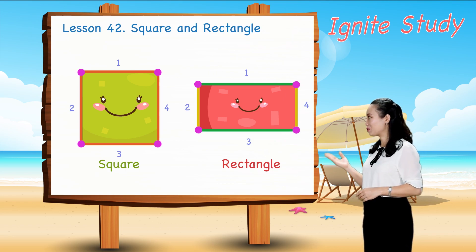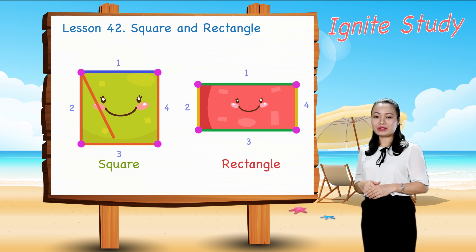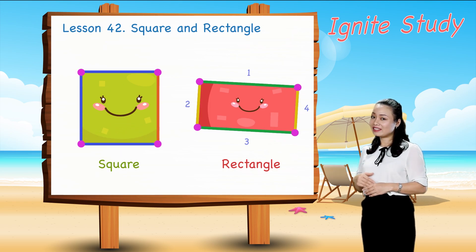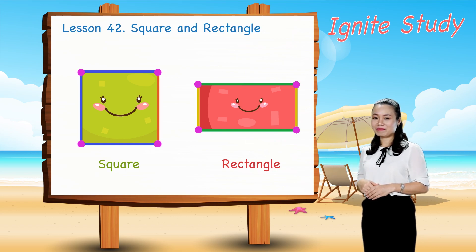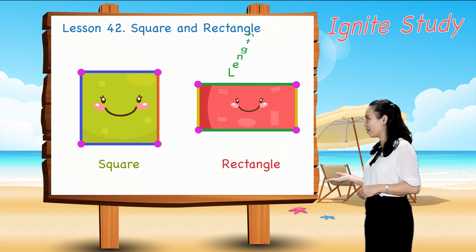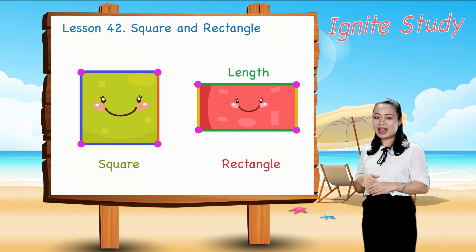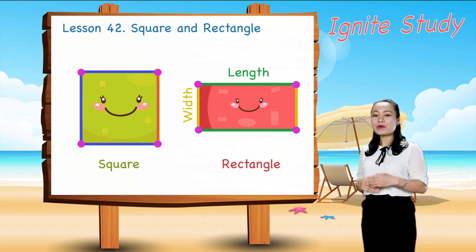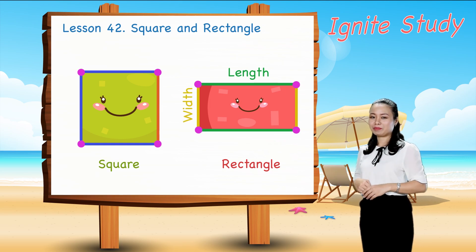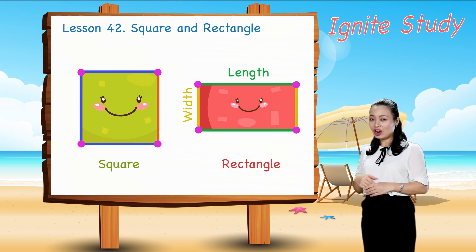the square has 4 equal sides, whereas the rectangle doesn't. The rectangle has the length and the width, where the length is longer than the width.